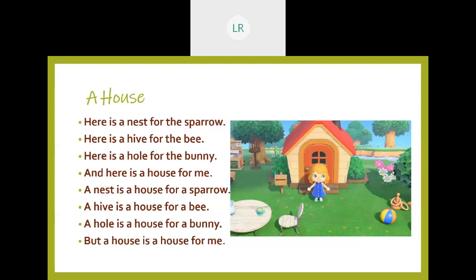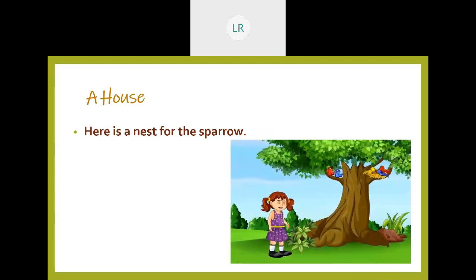Let me explain this one by one. Here is a nest for the sparrow. Which is a house for the sparrow? Nest is a house for the sparrow. Where will the bird eat? Where will the bird sleep? Only inside the nest. So nest is a house for the sparrow. Can you say the spelling for nest? N-E-S-T. Good. And the spelling for sparrow? S-P-A-R-R-O-W. Sparrow. Good.